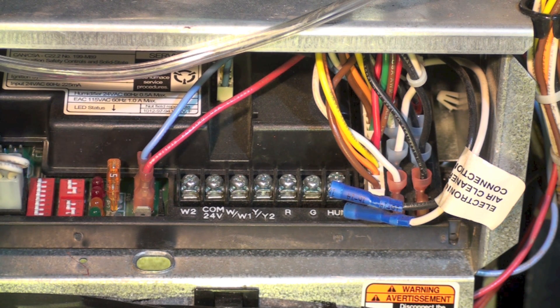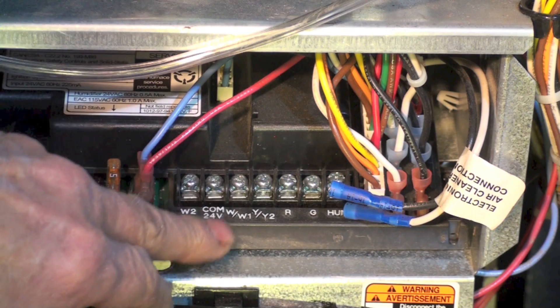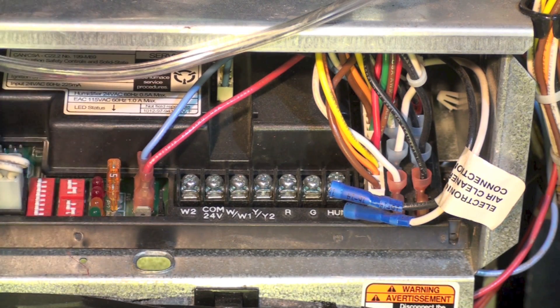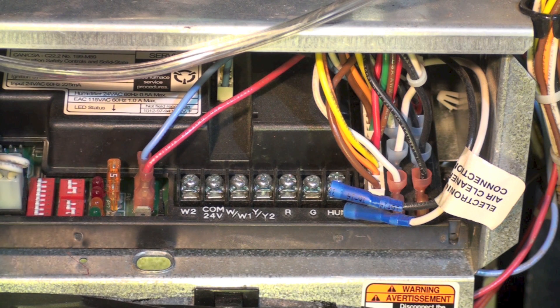If I jumper W2 to W1 so when there's a call for heat at W1 it's also calling for W2, it puts a time delay in the high fire. So W2 does not energize high fire for a programmed time period. This thing I think says 16 minutes. So if I was testing this furnace, if I do a service on this furnace, I would want both my stages to operate.